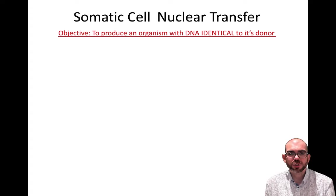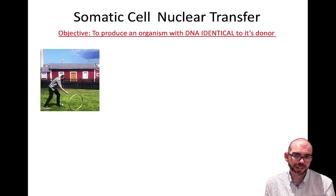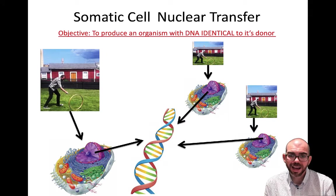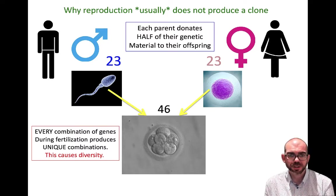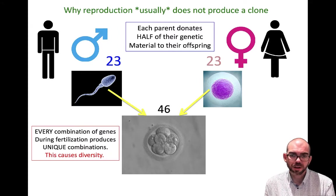We create a clone using a process called somatic cell nuclear transfer. The objective is to produce an organism with DNA identical to its donor. With normal reproduction, you get half your genetic material from each parent — 23 chromosomes from each, making 46 total — causing the organism to have its own unique genetic combination. There are trillions of possible combinations when two parents fertilize.